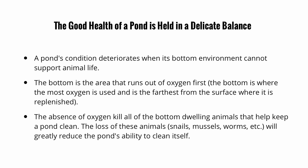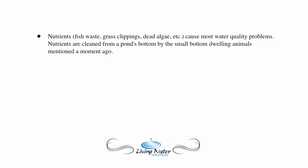The absence of oxygen kills all of the bottom-dwelling animals that help keep a pond clean. The loss of these animals — such as snails, mussels, and worms — will greatly reduce the pond's ability to clean itself. Nutrients such as fish waste, grass clippings, and dead algae cause most water quality problems. Nutrients are cleaned from a pond's bottom by these small, bottom-dwelling animals.